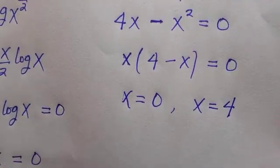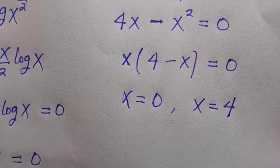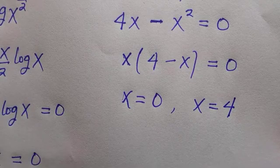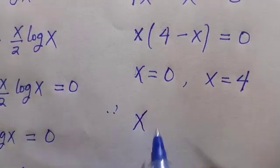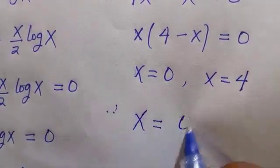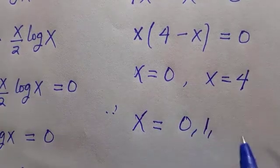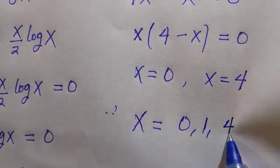So we have gotten three different solutions for x: x equals 0, x equals 1, and x equals 4. We can combine everything together here: x equals 0, 1, and x equals 4.